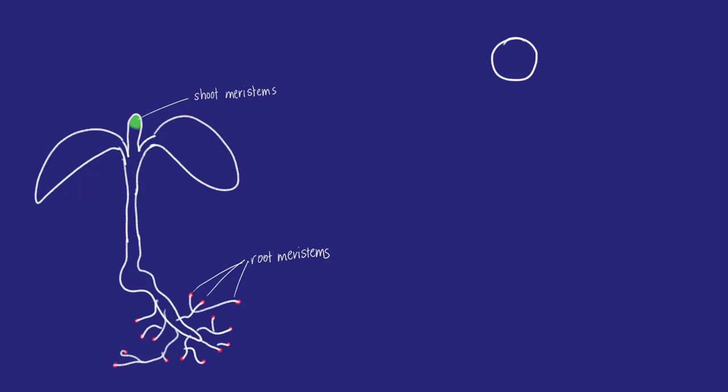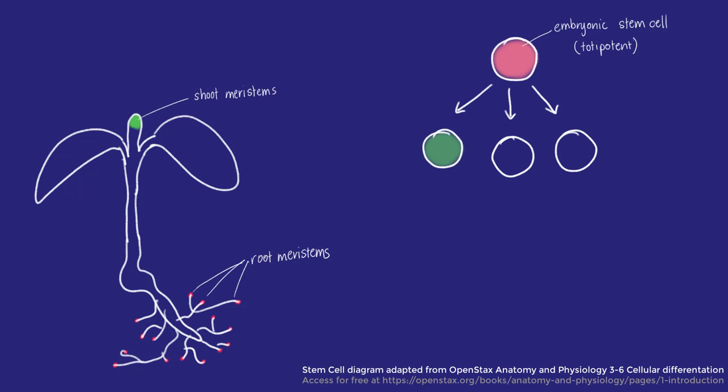In animals, not all cells can turn into anything. Embryonic stem cells begin as unspecialized cells, and essentially can become any type of tissue.